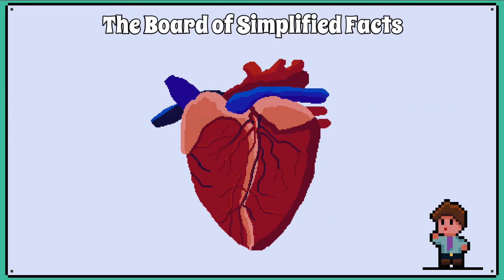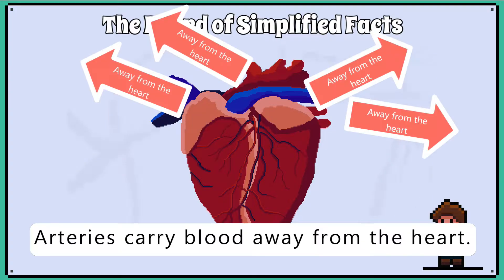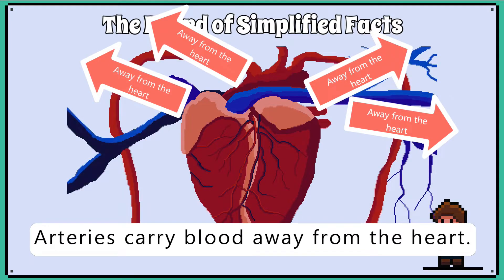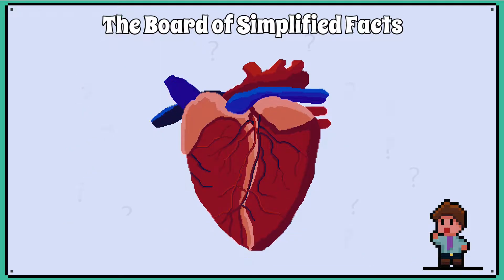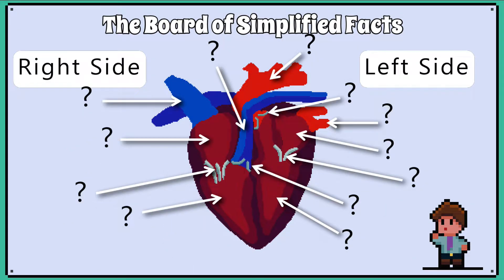An important rule to remember before we label the heart is that arteries carry blood away from the heart and veins carry blood back to the heart from the organs. These are all the labels you must learn for your exam regarding the heart.